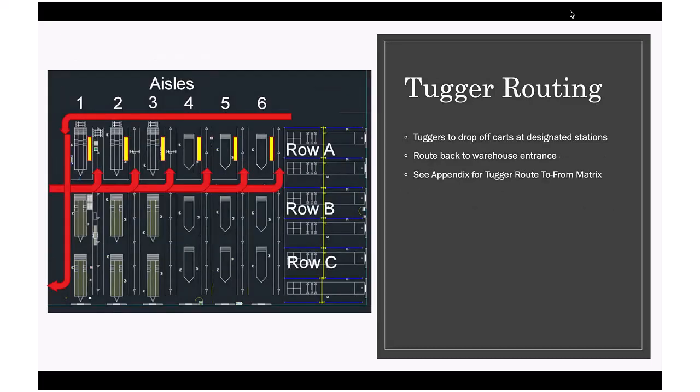Once our tuggers have a cart and they're bringing it to the final assembly floor, it'll travel in a path much like this. You see the arrows traveling into those aisleways. They'll drop off a cart in those yellow squares. Once they drop off that cart, they'll be routed back up and down to the main warehouse entrance.